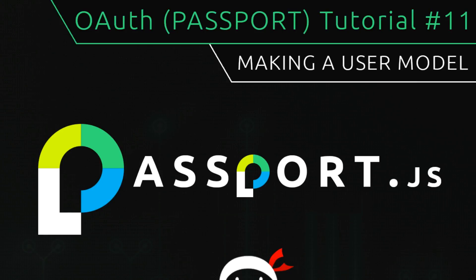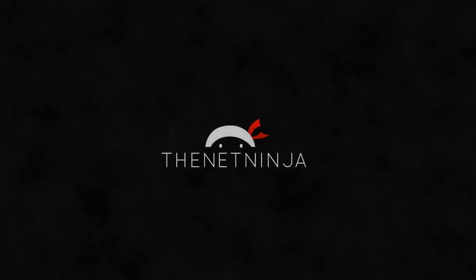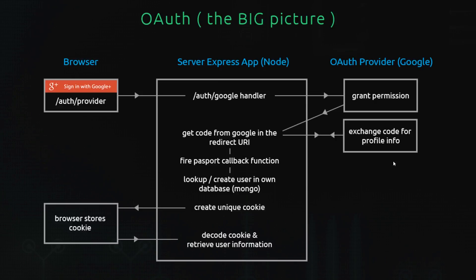Hey, what's up guys, welcome to your 11th tutorial. In this video we're going to start making a user model. Right now in the flow of things we're in this passport callback function, and what we're aiming to do is take the user that's come back from Google, take some information from their profile, and store it in our own database.